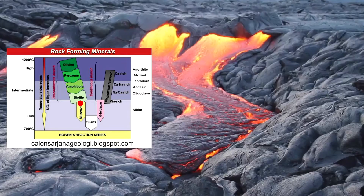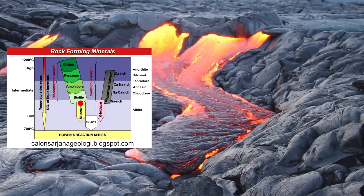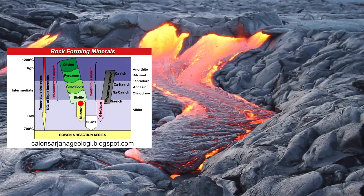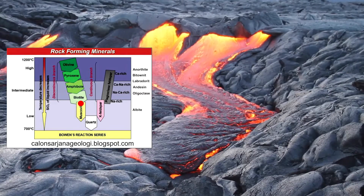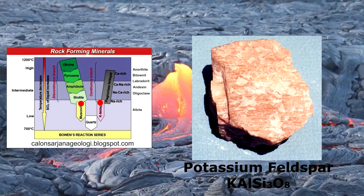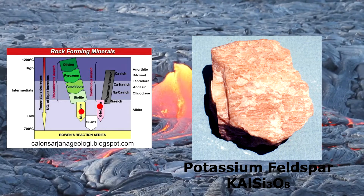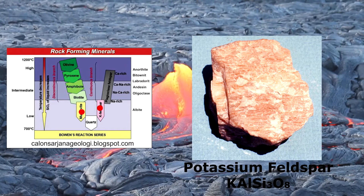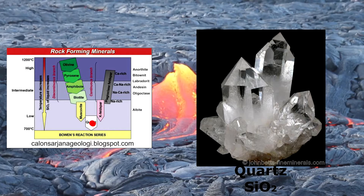Past biotite and albite, the reactions could evolve from the continuous path to potassium feldspar, and from the discontinuous path to muscovite, and finally, from either of those to quartz.